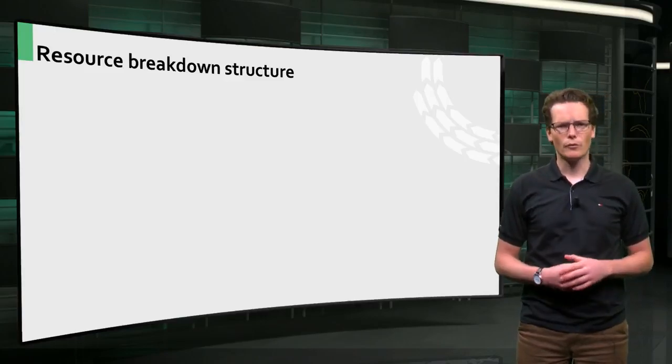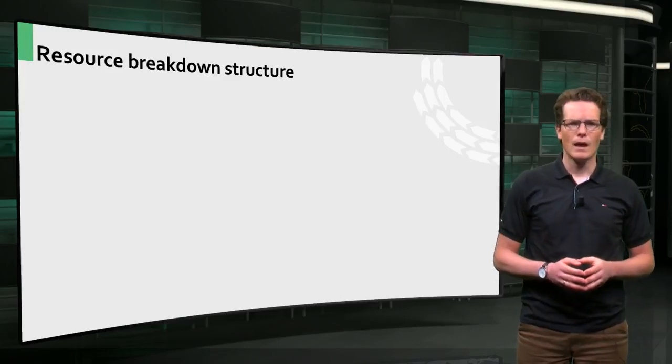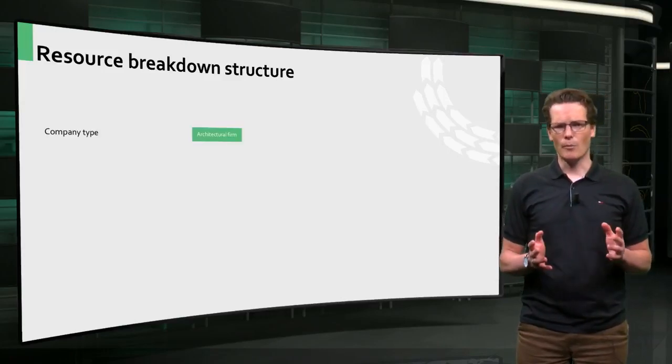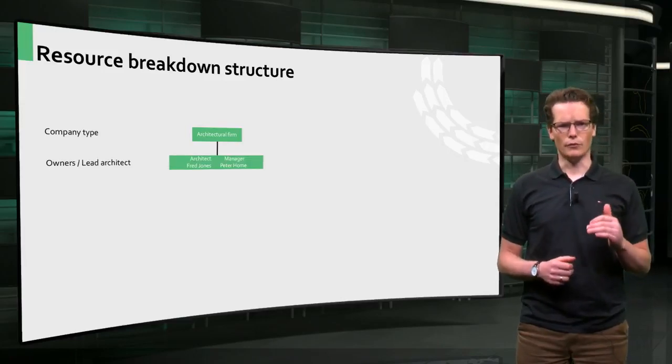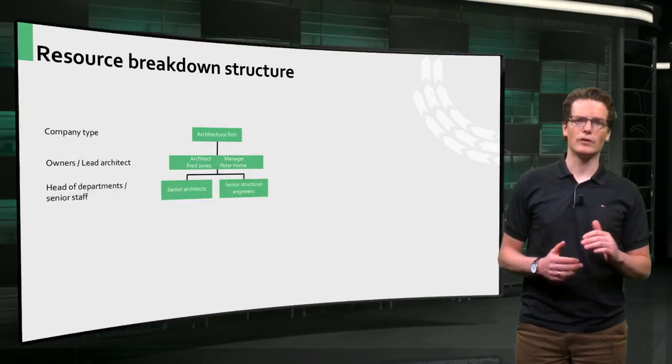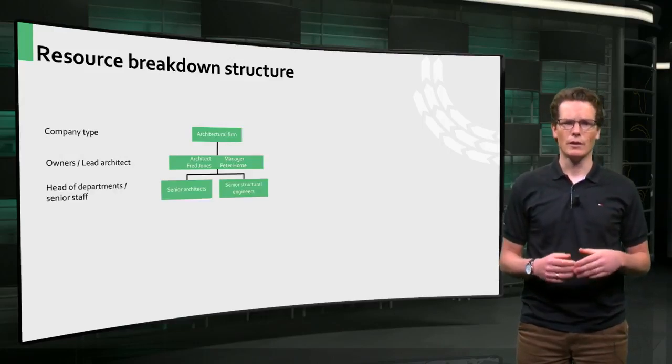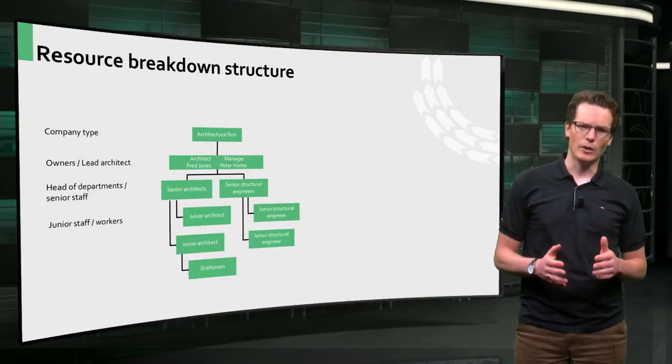Let me show you an example of a resource breakdown structure of an architectural firm. At the highest level, it shows the company type, then the owners or lead architects of the firm. One layer down, it shows the head of departments and the senior staff members, such as the senior architects. And finally, it shows the junior staff and workers at the bottom.